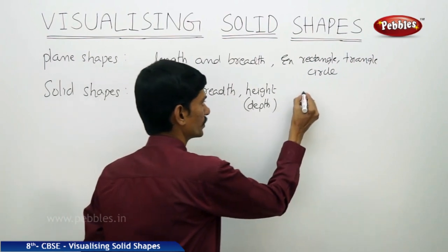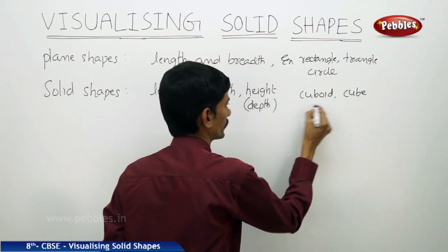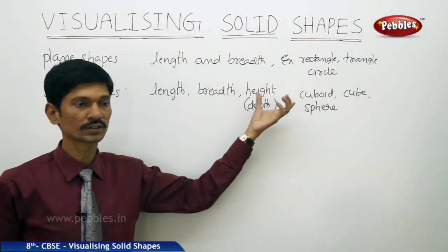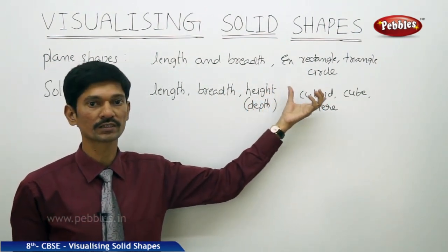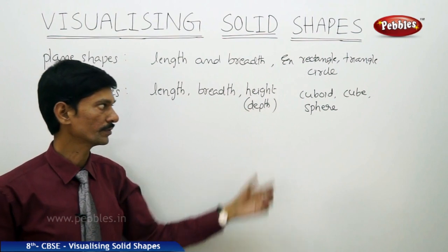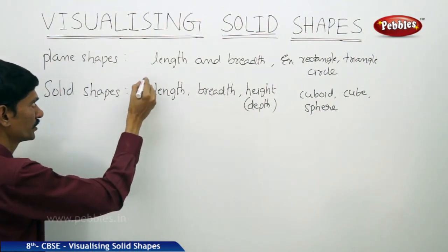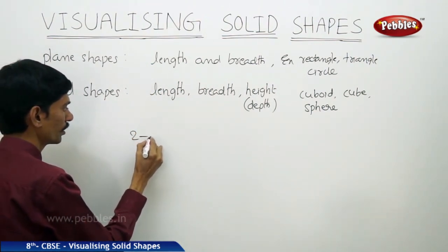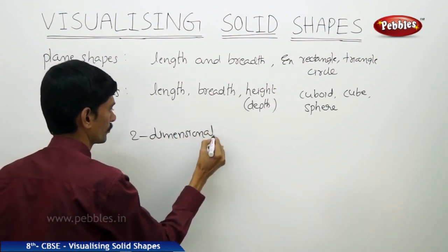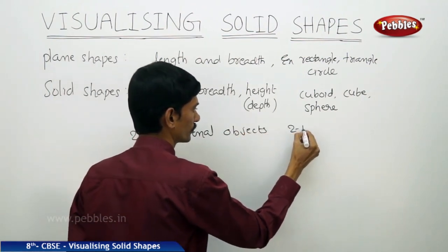Whereas a cuboid, a cube, and a sphere have three dimensions — length, width, and height. So these objects are called solid objects or solid shapes. The plane shapes have only two dimensions, so they are called two-dimensional objects, or simply 2D objects.